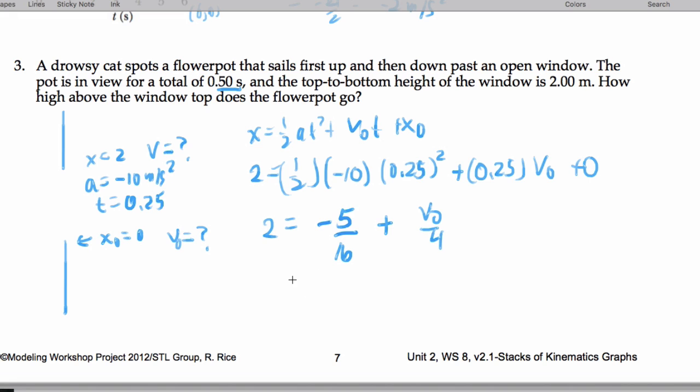And we can multiply through by 16. So we get 32 is negative 5 plus 4 v naught. So we're going to end up getting 37 is 4 v naught. So v naught ends up being 9.25 meters per second. Awesome.